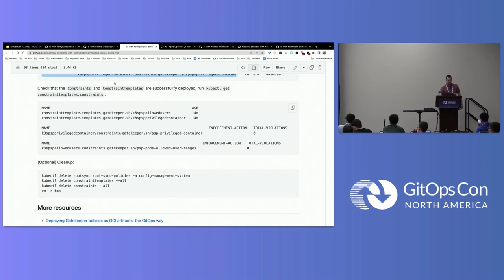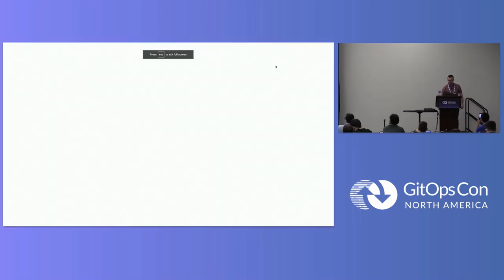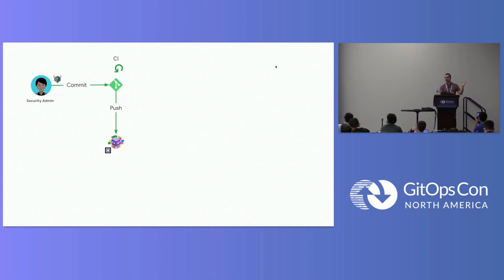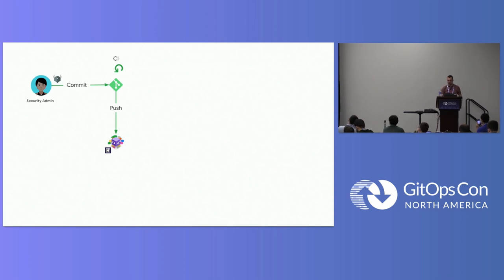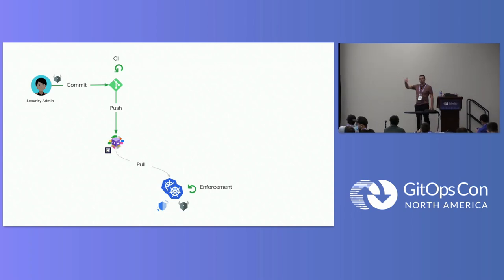Looking at the constraints with `kubectl get constraint` or `constraint template` on my cluster — they are now deployed and enforcing the cluster. I have zero violations in this case, but I'm now enforcing compliance and security. That's the first demo: as a security admin, pushing an OCI artifact wrapping Gatekeeper policies, with clusters provisioned with Config Sync and OPA Gatekeeper, illustrating a pull deployment mechanism via GitOps.